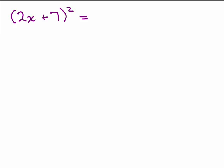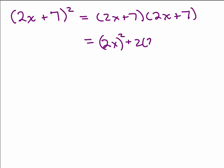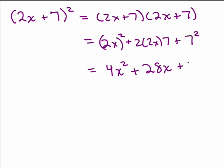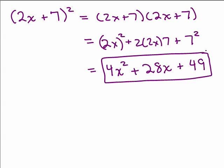Here's one for you to try. Put the video on pause and try it, then come back. You could have done this by writing out 2x plus 7 times 2x plus 7, or go directly to the formula: 2x squared plus 2 times 2x times 7 plus 7 squared. Everybody in the end should have gotten 4x squared plus 28x plus 49.